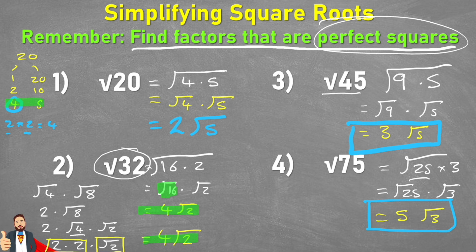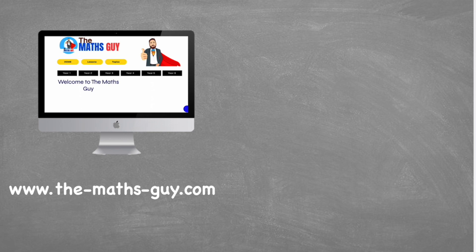All of these answers are equivalent to their original question — they are just in simplified form. Notice one thing: we always put the single number before the square root; that's just common practice. So if you end up with the square root first because you did the factors the other way around, just flip it around in your final answer. Remember that multiplication is commutative and it doesn't matter which way around they are. And there you have it — that is simplifying square roots. Hopefully this video has been helpful. If it has, think about subscribing to the channel. Peace out and thank you very much.